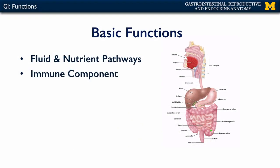The first is to serve as a pathway for fluid and nutrients. We bring materials in through the mouth, the oral cavity, through the pharynx, down the esophagus, into the stomach, through the small intestines, eventually through the large intestines, the rectum, and out the anus. The goal is to absorb these fluids and nutrients from the lumen, or the central portion of the tube of the gut, into the body — into the cardiovascular and lymphatic systems.